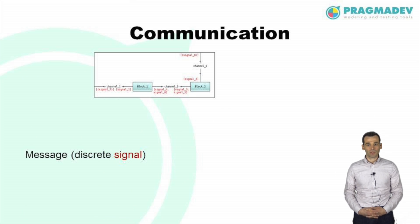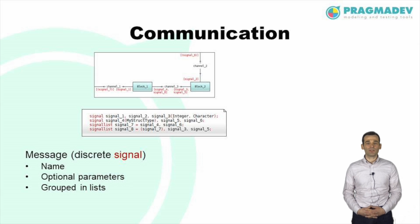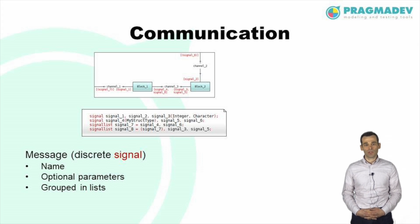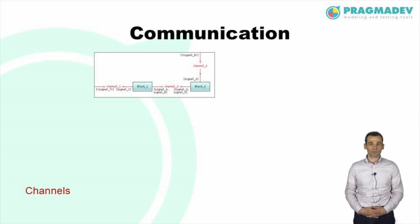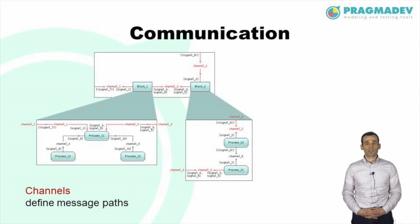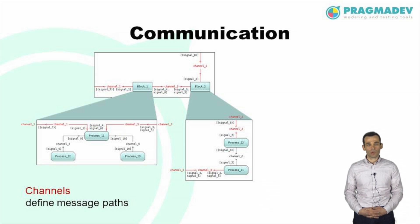Communication in SDL is asynchronous and is described using messages or discrete signals. Messages can be defined at any level of the model, be it system or block. They have names and optional parameters and can be grouped into lists for ease of use. Messages travel in channels. The channels have names and expand through the structure connecting agents to one another or to the environment. A message path is formed by the channels connecting the source and destination of a message. The end point of a path must be either a process or the environment.